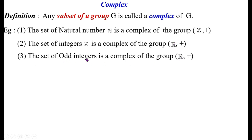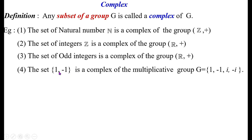The set of all integers is a complex of the group (R, +). Also, the set {1, -1} is a complex of the multiplicative group G = {1, -1, i, -i}, because {1, -1} is a subset of {1, -1, i, -i}. Therefore it is a complex of that multiplicative group G.